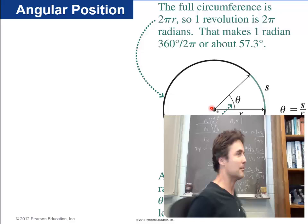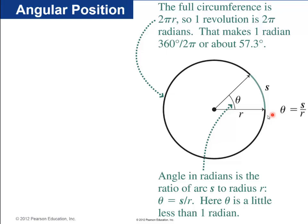We start with angular position. If we have some circular path, an object or a little particle on a circular path of radius r, we can keep track of its position either with the distance it travels s (arc length), or with the angle theta it makes with the center of the circle. If you go all the way around, s is 2πr. The angle can be specified in radians, so it's 2π radians for a full circle. We have a nice equation: theta equals s divided by r. One radian is 360 degrees divided by 2π, or about 57.3 degrees.